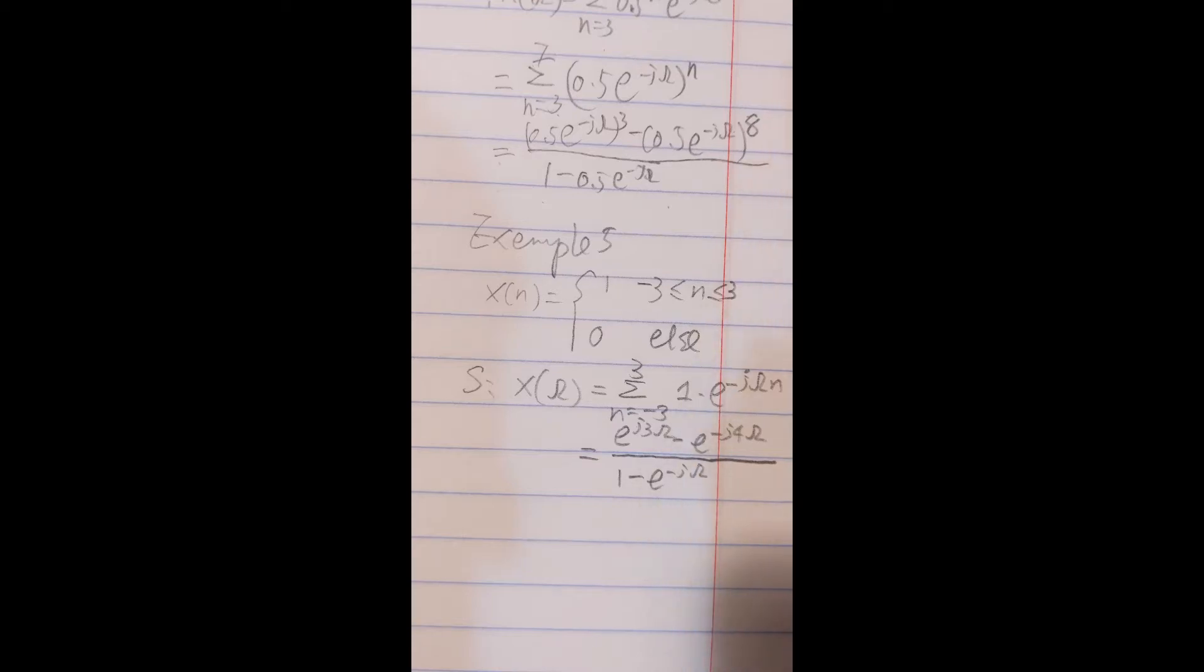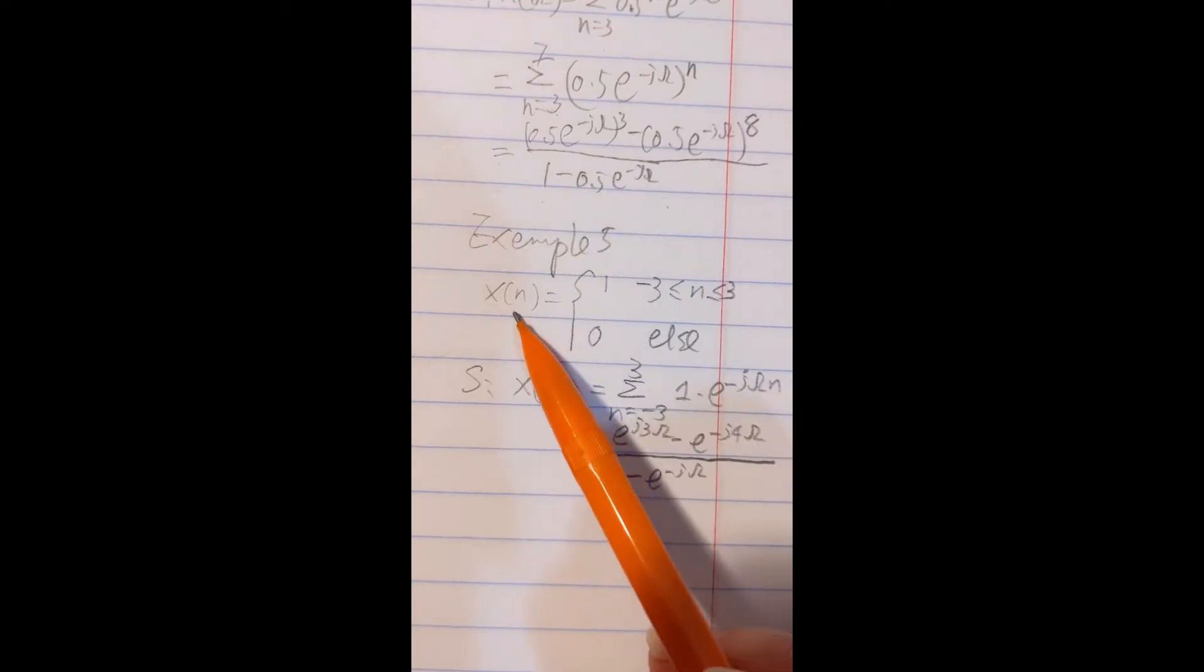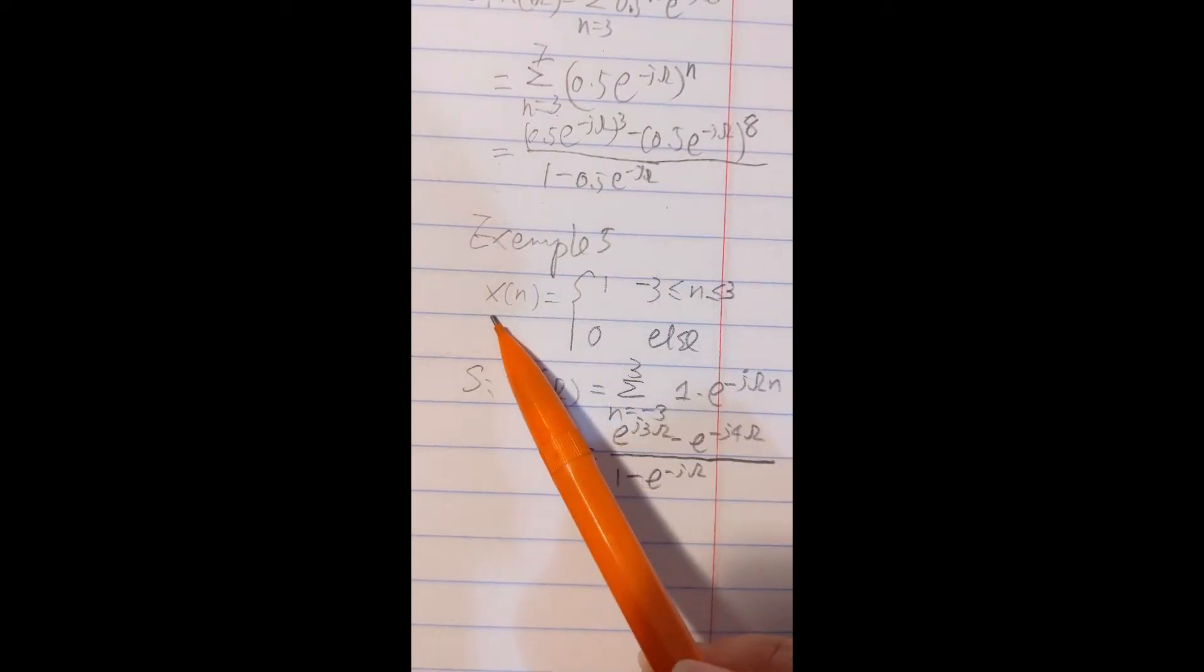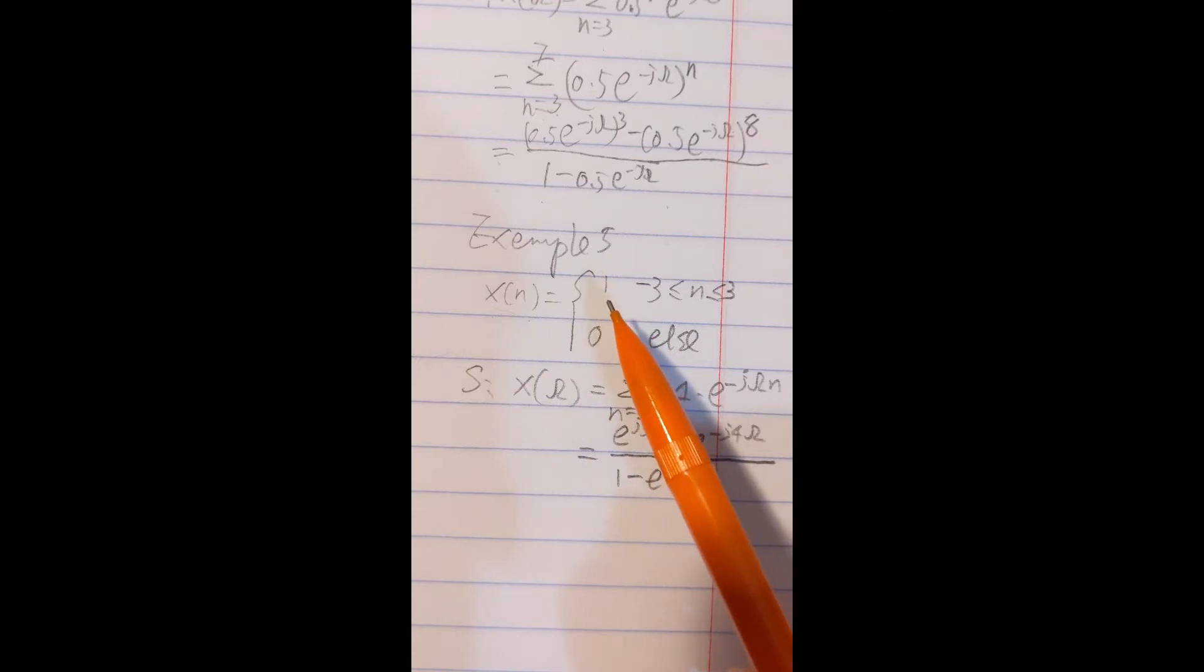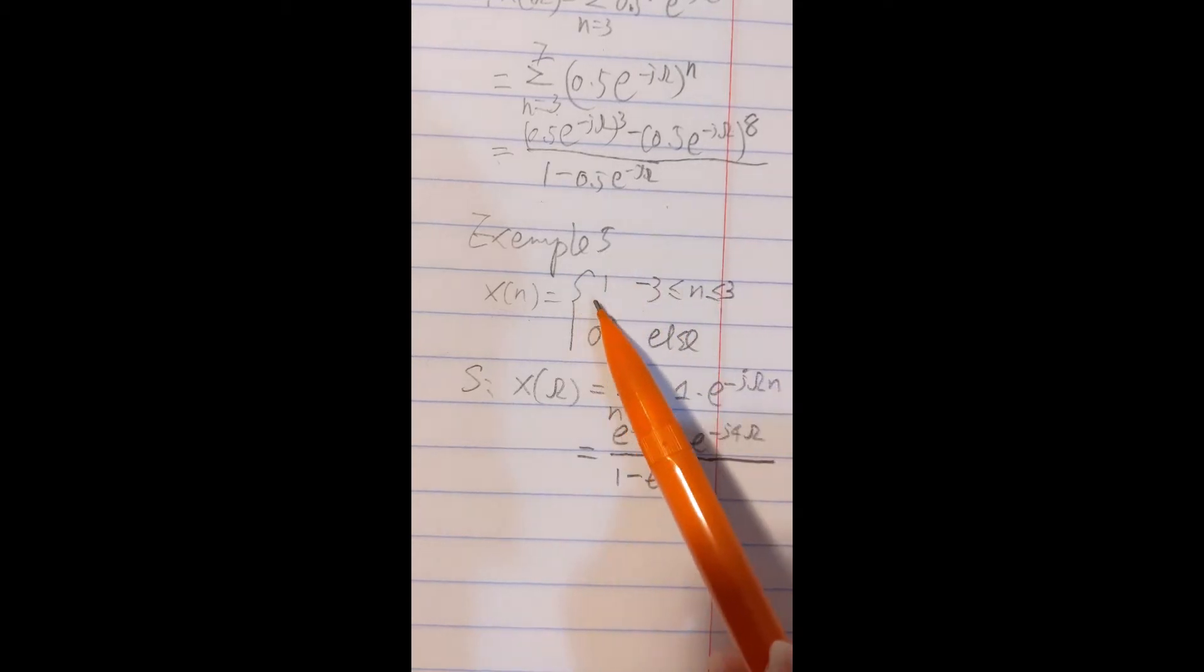Okay, now let's look at example number five. This one is very close to the previous one. So now my sequence, still only part of time index have value. From minus three to three we have value one, or other points we get zero.